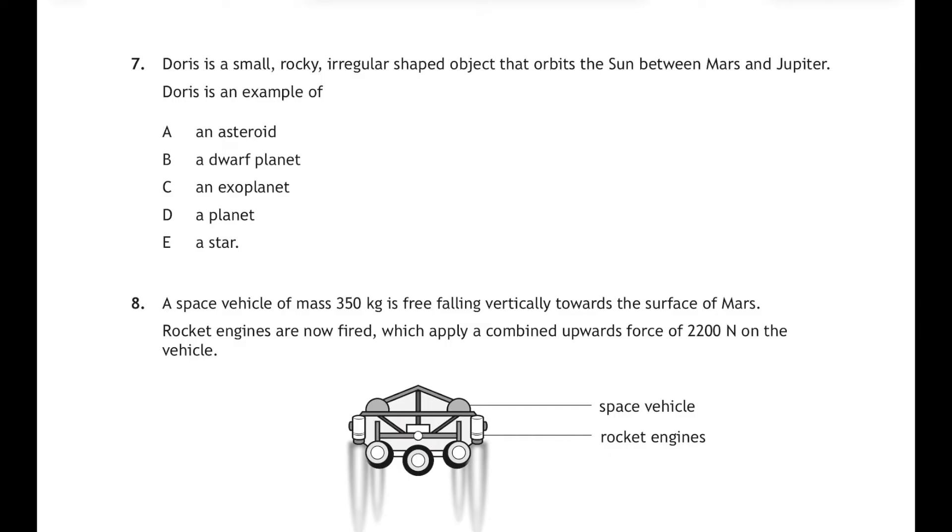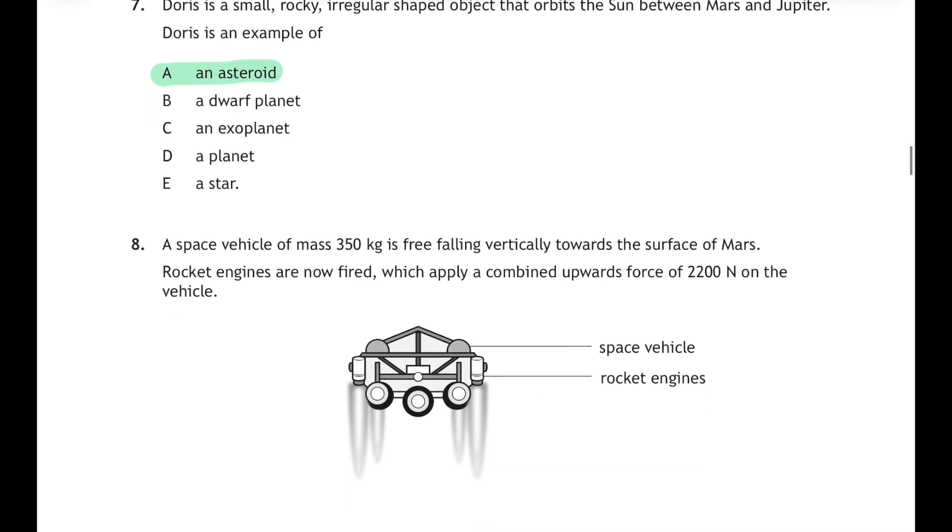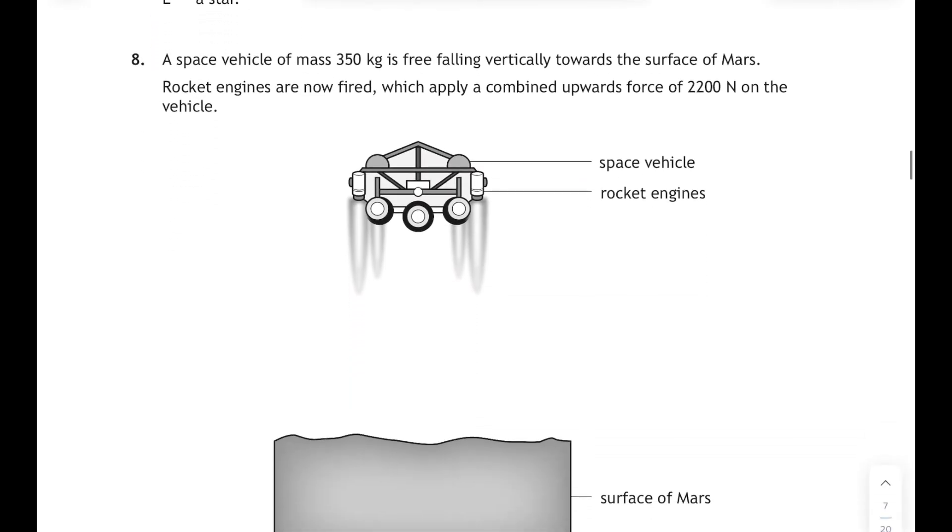Doris is a small rocky irregular shaped object that orbits the sun between Mars and Jupiter, and Doris is an example of—well, between Mars and Jupiter you've got the asteroid belt, so Doris is an asteroid.